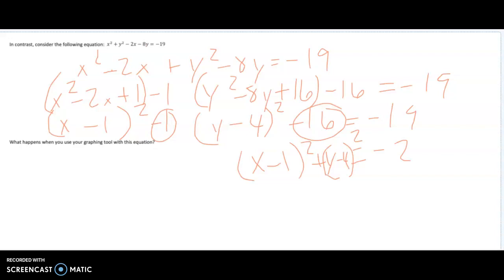So the center of the circle is going to be (1, 4). That would be the center of my circle. Now, but what's my radius? It's the square root of this. And I can't do a square root of a negative. So there's going to be no solution. It's not going to work.